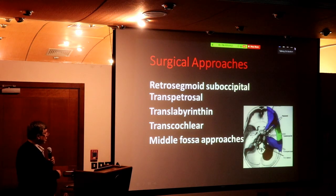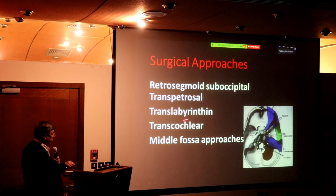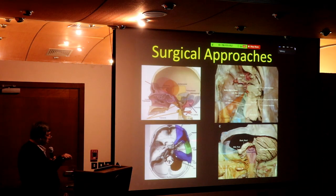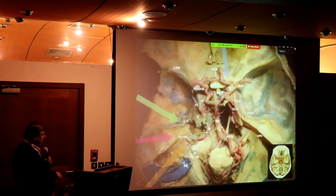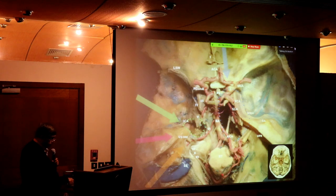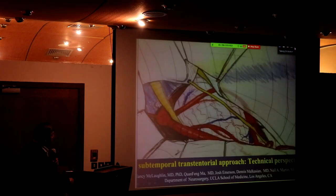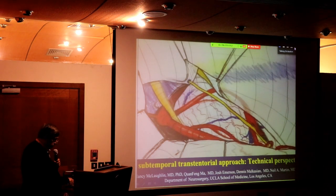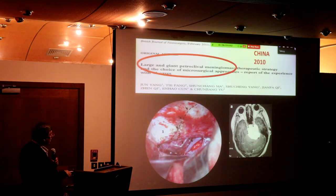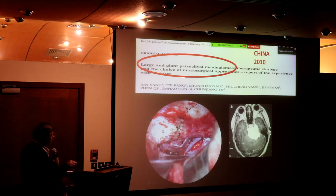You have to imagine how to reach that area. Subtemporal route, transpetrosal, retrosigmoid, and so on. A 1992 paper by Mariam Shaker from Seattle used the subtemporal approach. For large and giant petroclival meningiomas, microsurgical resection is the choice. The subtemporal approach — you go underneath the temporal lobe, incise the tentorium, and you can remove them.